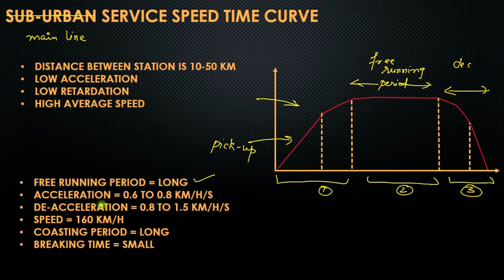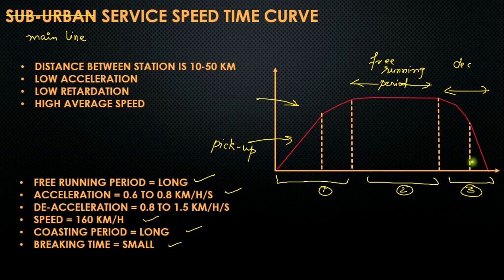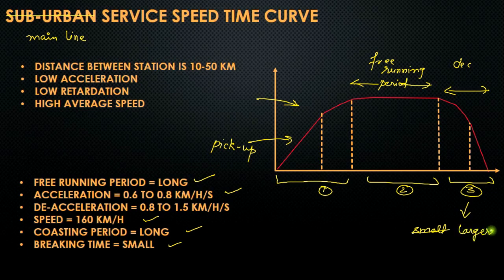For mainline services, the free running period is longer and acceleration is very small — 0.6 to 0.8 km per hour per second. The deceleration period is 0.8 to 1.5 km per hour per second. The average speed required is higher. The coasting period is longer and the braking period is smaller, larger in comparison to urban and suburban services.